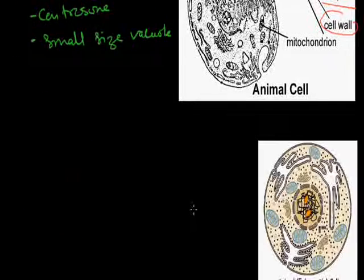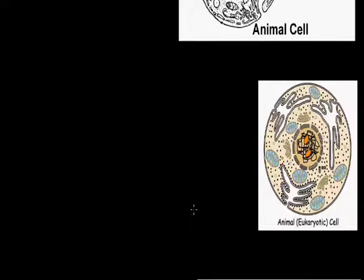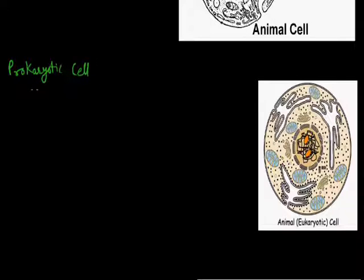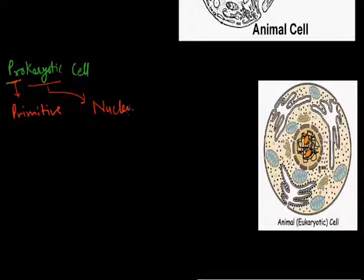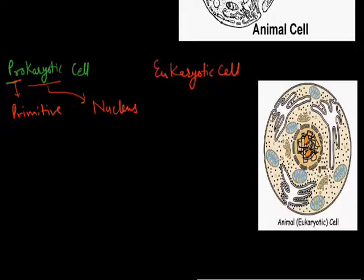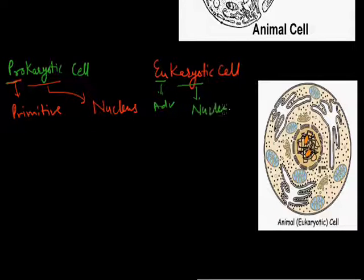Now we discuss prokaryotic cells and eukaryotic cells. 'Pro' means primitive, so if cells are primitive in nature we call them prokaryotic. 'Karyotic' refers to the nucleus. 'Eu' means advanced, so if cells have an advanced, well-developed nucleus we call them eukaryotic cells.